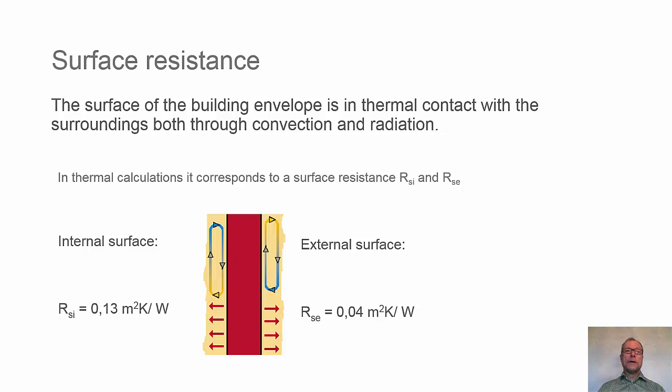And now we're ready to introduce the concept of surface resistance. In the picture here, the red bar is symbolizing a wall, for instance. And in order to get heat to come from surfaces to the surrounding, it can use two phenomena: either long wave radiation or convection at the surfaces. And this can be lumped together in terms of thermal calculations, lumped together to a surface resistance.